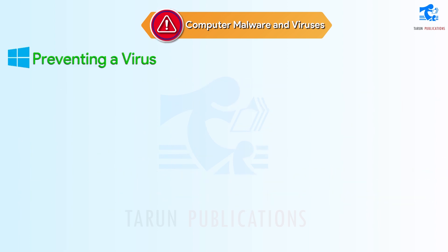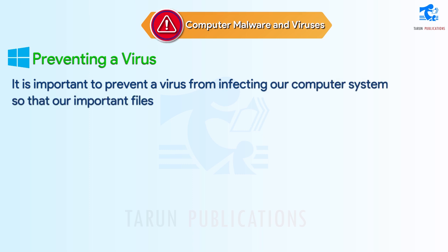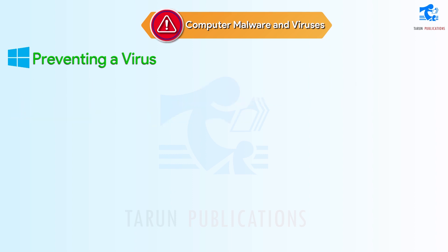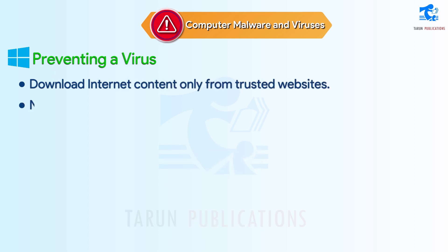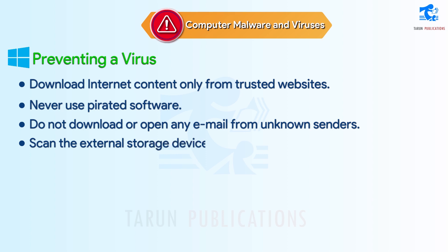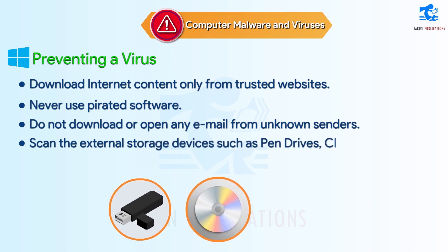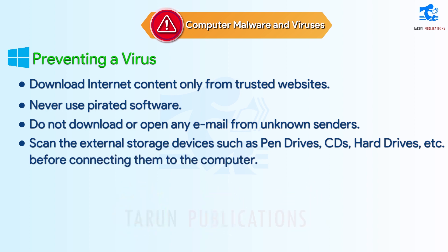Preventing a virus. It is important to prevent a virus from infecting our computer system so that our important files and data are not at risk. We can do the following to prevent a virus: download internet content only from trusted websites, never use pirated software, do not download or open any email from unknown senders, scan external storage devices such as pen drives, CDs, and hard drives before connecting them to the computer, and always use an antivirus program to protect the system.